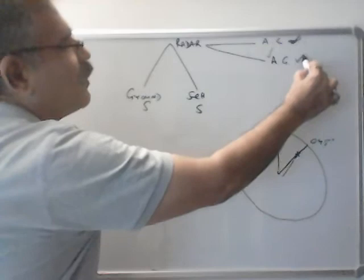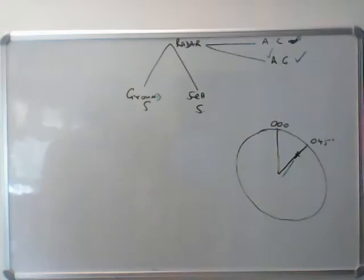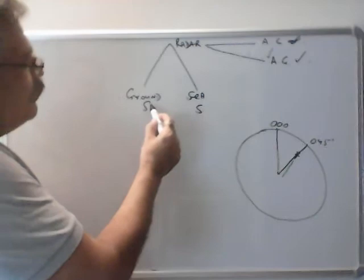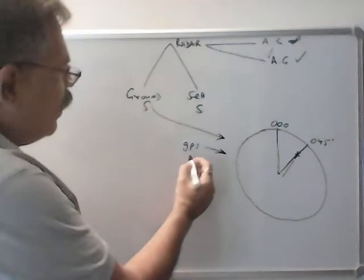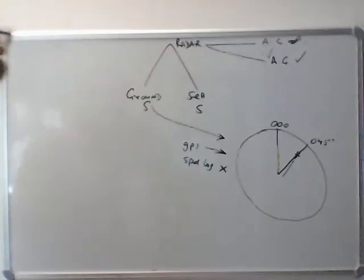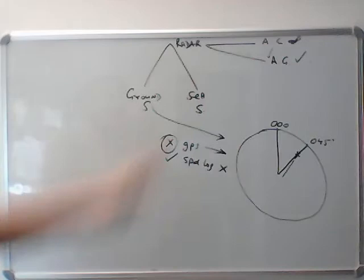In this case, we can keep the radar on sea stabilized or ground stabilized — it does not matter. Because we will get the same bearing and distance from the lighthouse or the piece of land. When you keep the radar to ground stabilized, GPS gets connected to the radar and speed log is not connected. But when you keep the radar on sea stabilized, GPS is not connected and speed log gets connected to the radar. For anti-grounding, you can keep it on ground or sea — anything, it does not matter.